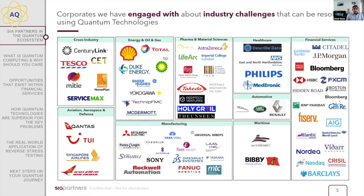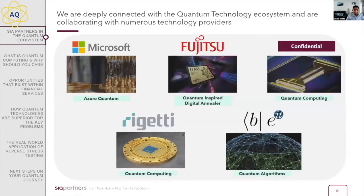Here's a snapshot of some of the organizations we've been engaging with, in terms of problems that could be resolved by quantum technologies — some things they can do today to create value. The main point is to show the breadth of contact and variety, with a lot in financial services. On the technology side, we work with leading firms including Microsoft, Fujitsu, Rigetti, and a trapped-ion technology company we can't yet name.